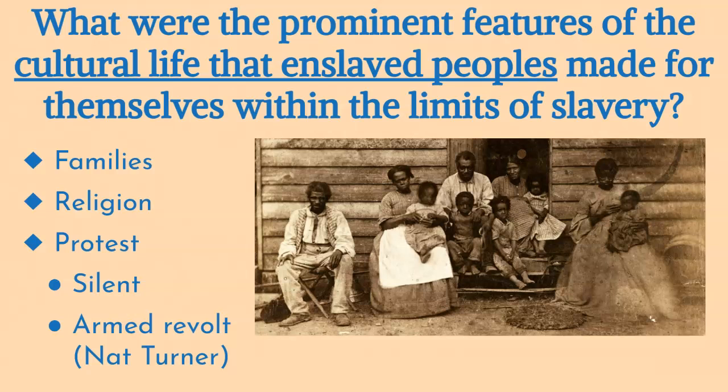Large-scale organized resistance among enslaved people was rare, partly because plantations were small and dispersed, and slaveholders were hyper-vigilant in preventing rebellion. However, small acts of resistance were common, including running away, fighting with owners or overseers, sabotaging equipment, and stealing. These acts of defiance were ways for enslaved people to assert their agency, even in the face of overwhelming power.